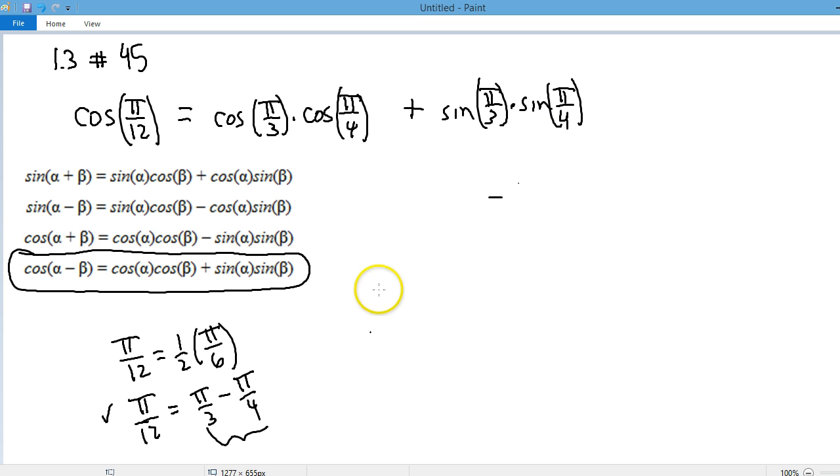And on our unit circle, π over 3 is here. It has the coordinates 1 half and root 3 over 2. π over 4 is here. It has the coordinates root 2 over 2 and root 2 over 2.